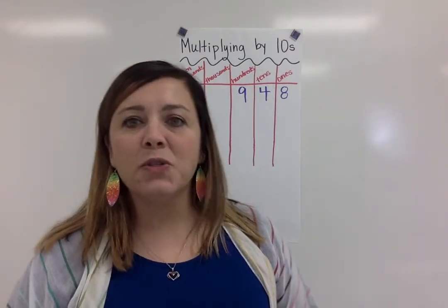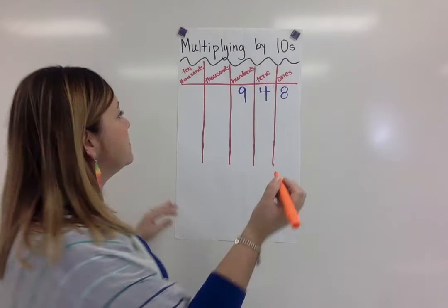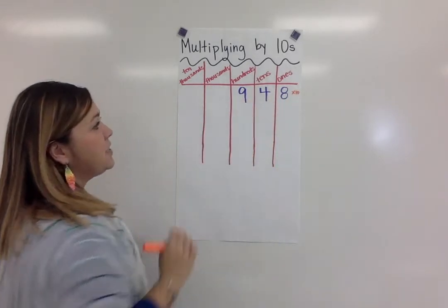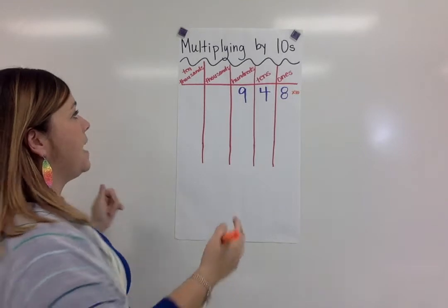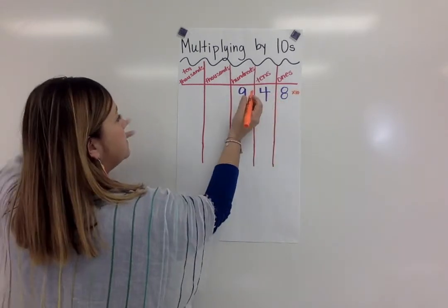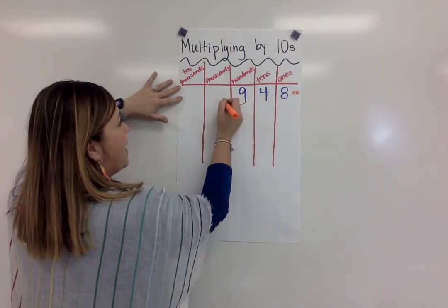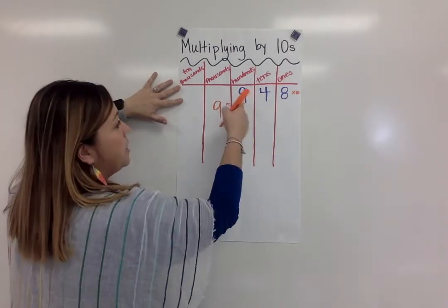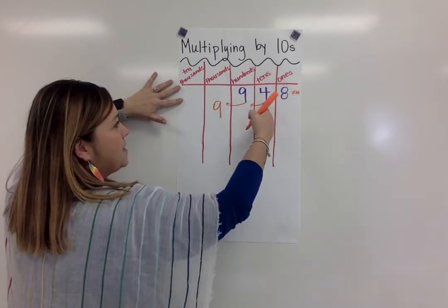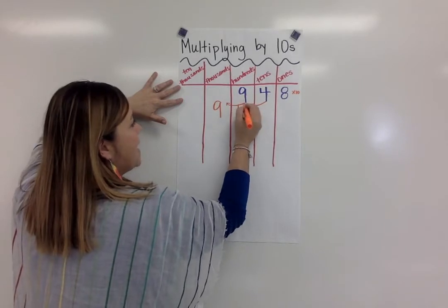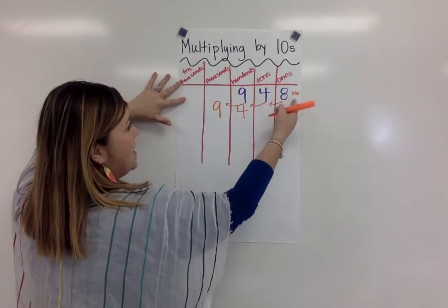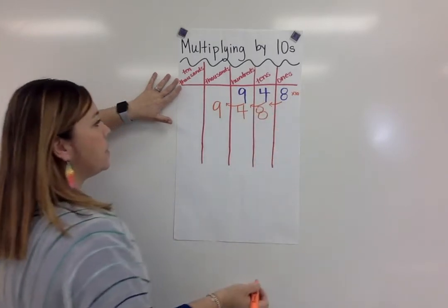So if I were to multiply 948 by 10, that means I would multiply each of the digits in that number by 10 and all the values would increase by 10 times. So 900 increases to 9,000. The 40 increases by 10 times and now has a value of 400. And if I multiply the 8 by 10, it now has a value of 80, so it goes in the tens place.